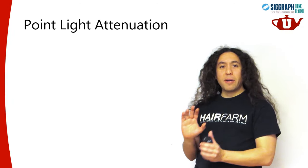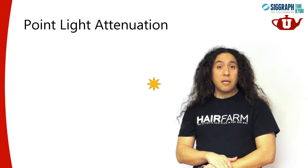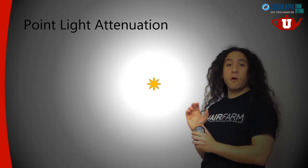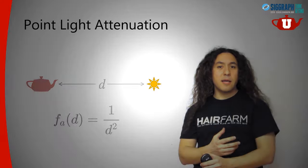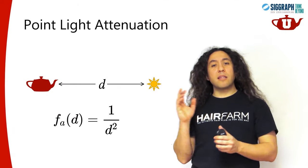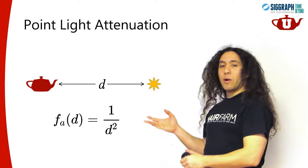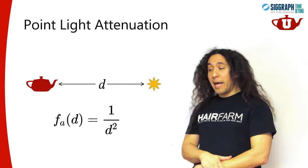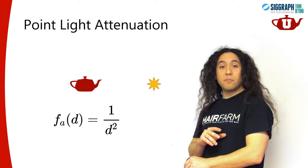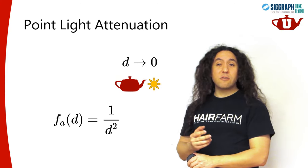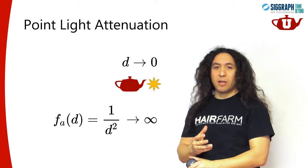Putting aside any concerns about the realism of point light sources, the practical problem they have is their attenuation behavior. For any light source, as you move away from it, the light you receive at a unit area becomes less and less - this is light attenuation. If the distance between the light receiving surface and the point light is d, then the attenuation function for point lights will be 1 over d squared - that's the inverse square attenuation function. There's nothing theoretically wrong about this; it's the correct attenuation function for a point light. But there's a practical problem: when the distance d goes to 0, this attenuation function goes to infinity, and infinity is not something we want to deal with in our renderer.